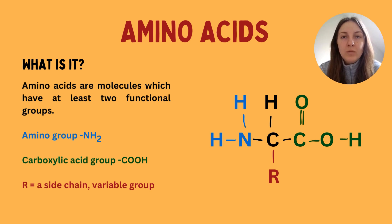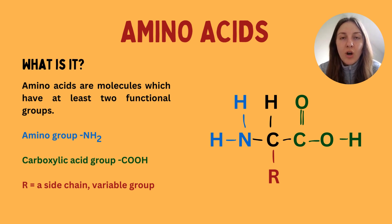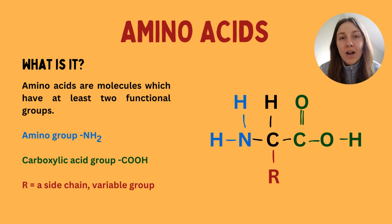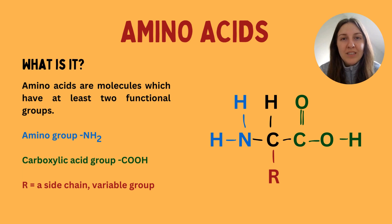All of these bonds that you see are covalent bonds, because all of these atoms are non-metals, so just be careful if you ever get asked about the types of bonds. An amino acid also has a variable region, often called an R group. Essentially, there is a whole host of different things the R group could be — it just depends on the type of amino acid, so the R group changes every time.